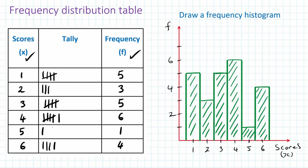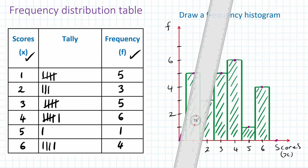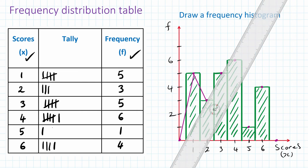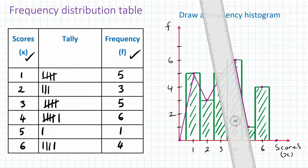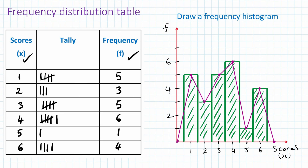Finally, we construct a frequency polygon. To draw a frequency polygon, we just make a point right on top of each column — make sure it's right in the middle. This is zero, and what we do is just use a ruler and join them all together. The green one is the frequency histogram and the purple line is called the frequency polygon.